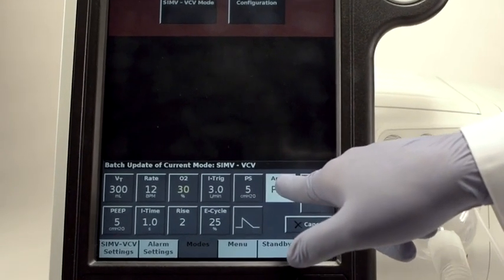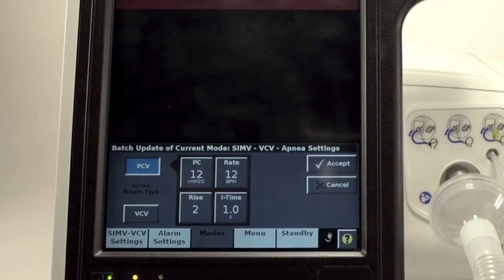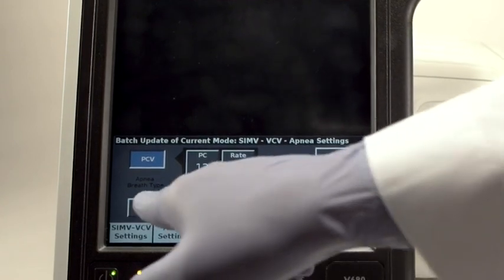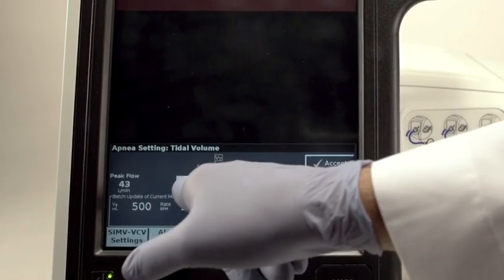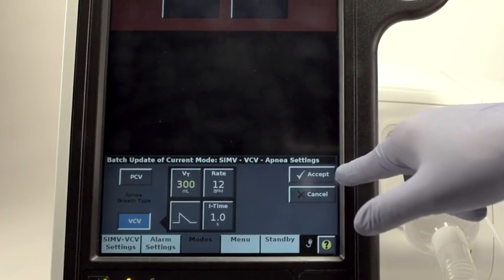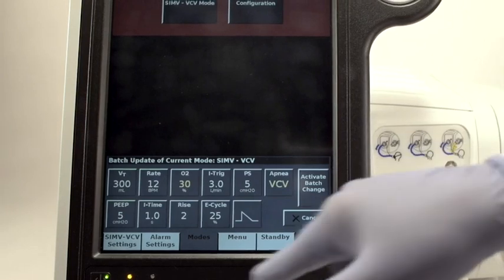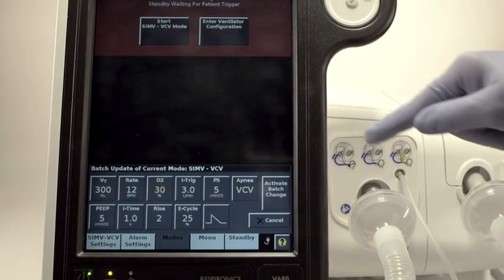Touch the APNEA button to access the controls for APNEA Backup Ventilation. APNEA Backup is available as either Pressure Control or Volume Control and has its own settings, independent of the main mode ventilating parameters. Let's set the APNEA Ventilation to Volume Control and the Tidal Volume to 300 as well. The APNEA Delay Time is found in the Alarm Settings window.